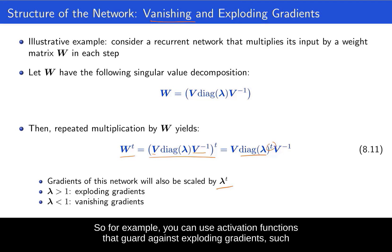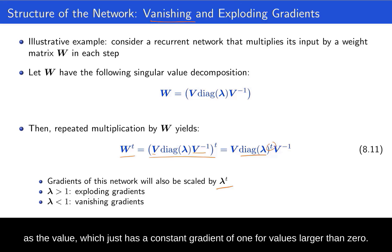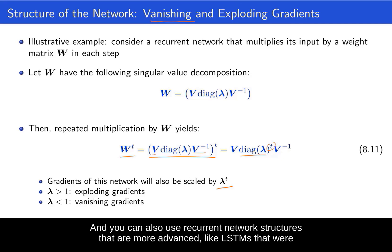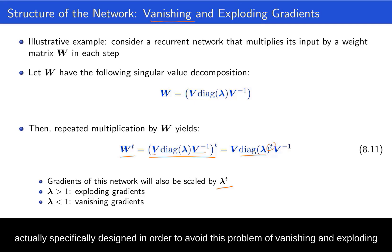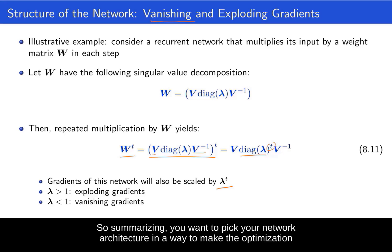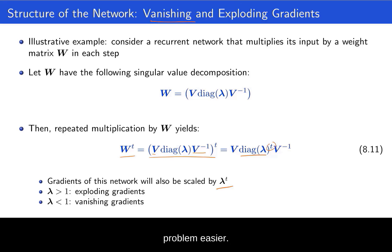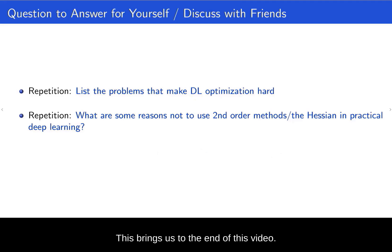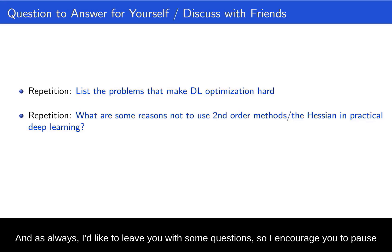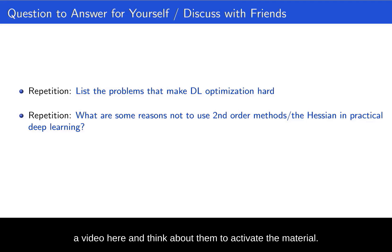For example, you can use activation functions that guard against exploding gradients, such as the ReLU, which has a constant gradient of 1 for values larger than 0. You can also use more advanced recurrent network structures like LSTMs, which were specifically designed to avoid the problem of vanishing and exploding gradients. In summary, you want to pick your network architecture in a way to make the optimization problem easier. This brings us to the end of this video — I encourage you to pause and think about the review questions to activate the material. Thank you, and I'll see you in the next video.